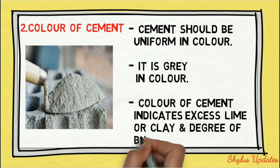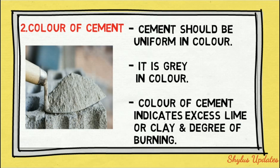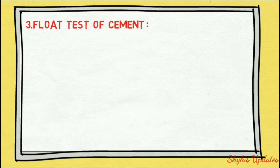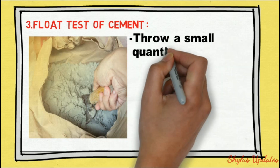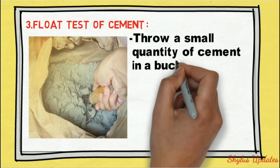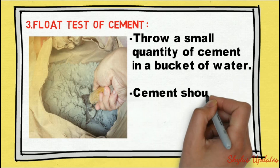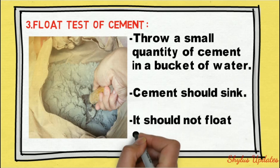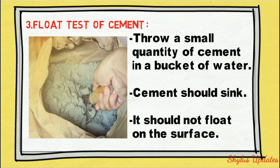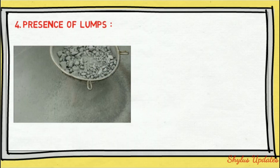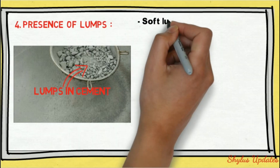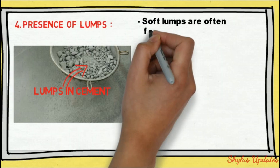Flow test of cement: throw a small quantity of cement into a bucket of water. The cement should sink — it should not float on the surface. Presence of lumps: soft lumps are often formed in cement.